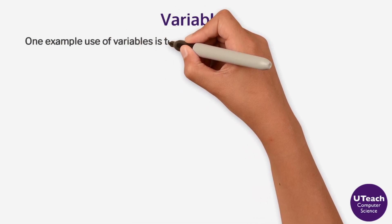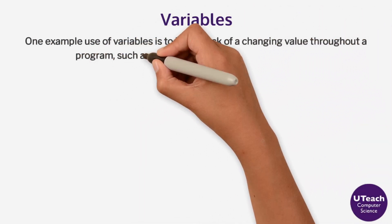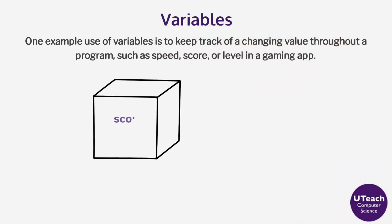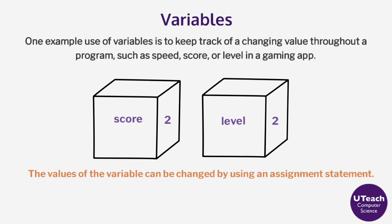One example use of variables is to keep track of a changing value throughout a program, such as speed, score, or level in a gaming app. The score variable could be initialized to zero at the beginning of the game and increase by one during gameplay. A level variable could be initialized to three at the beginning of the game and decrease by one during gameplay. The values of the variable can be changed by using an assignment statement.